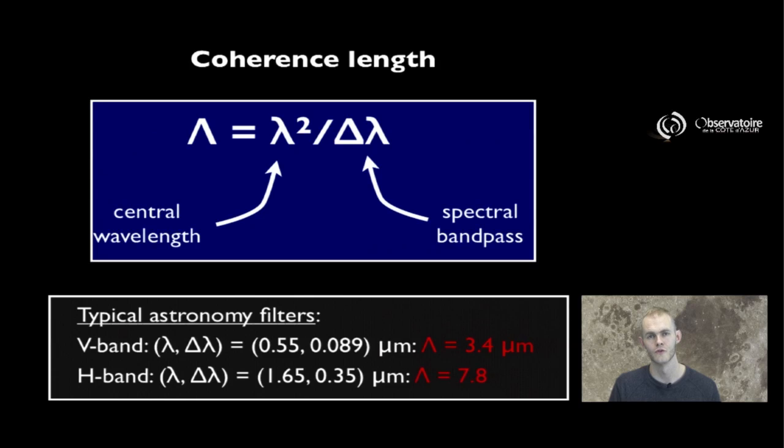And if we look at certain typical astronomical filters, like a filter that's used to observe in the visible band or in the H band, each of these filters is characterized by a central wavelength. So for the V filter, it's 0.55 microns and a bandpass of about 0.1 microns, a little smaller than this. And if we do the application, we see that the coherence length corresponding to such a filter is about 3.4 microns.